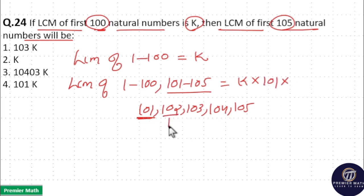Here 102 is divisible by 51. So 51 times 2 is 102. This 51 and 2 are included in 1 to 100, so leave it.